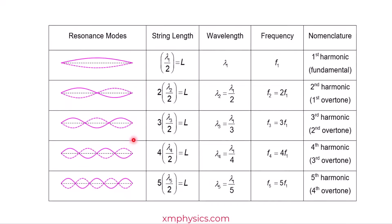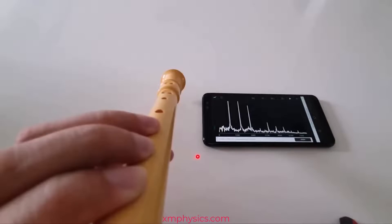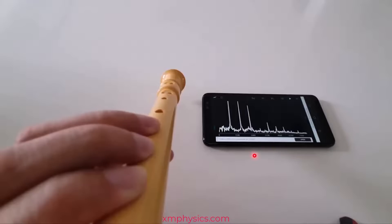Later in the video we were analyzing the sound produced by the recorder. Again it's not monotonic — this is the fundamental, then the second harmonic, third harmonic, fourth harmonic, fifth harmonic, and so on. We hear the fundamental as the pitch of the sound, but we can perceive the other harmonics because they give the sound its particular timbre. That's why different instruments can give you the same pitch but all sound different to us — because the harmonic content is different.